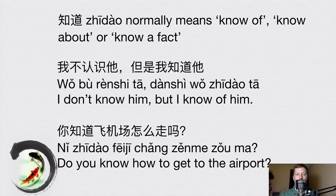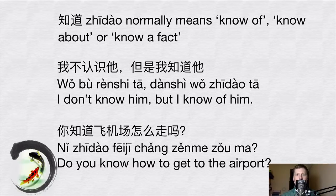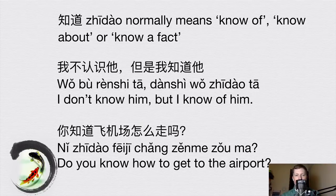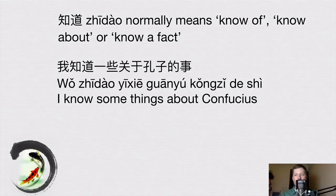Second example: 你知道飞机场怎么走吗 — 'Do you know how to get to the airport?' In this sentence we're talking about knowing a fact — knowing about how to get to the airport — so we use 知道.